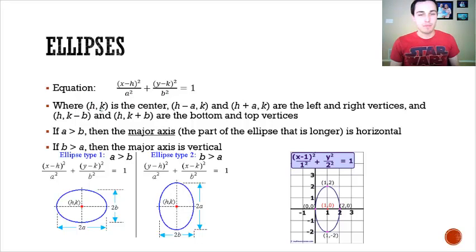So once again, h,k is the center, and then whatever the a value is, not the number you're actually looking at, because you remember it's squared, so you have to square root it. But whatever a is, you're going to go that much left and right of center, and you put a point. And whatever the b value is, you're going to go that much up or down and put a point.